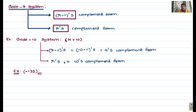Ten's complement is the r's complement form where r equals base 10. For any number system — base 8, base 16, base 3 — we can define only two complement forms. One important point: these complement forms are purely applicable for negative number representation only. Do not blindly apply them to positive numbers.